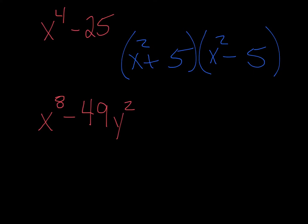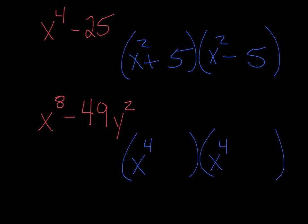For the next equation: we have a subtraction sign, the coefficient has a square root (√49=7), and the exponents are even — so this is difference of squares. Square root of x to the eighth gives x to the fourth (divide 8 by 2). Square root of 49 is 7. Dividing the exponent of y squared in half gives y. One gets a plus, one gets a minus. When dealing with exponents bigger than two, check whether you can continue factoring, because sometimes the result will contain another difference of squares. Here, you can't take the square root of 5 or 7y, so we're done.